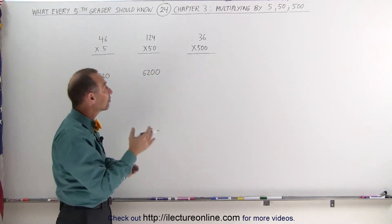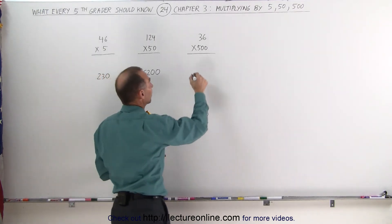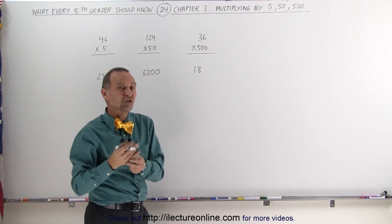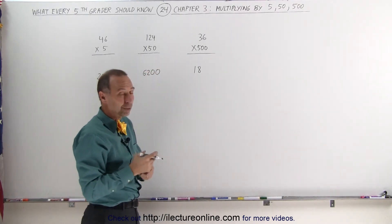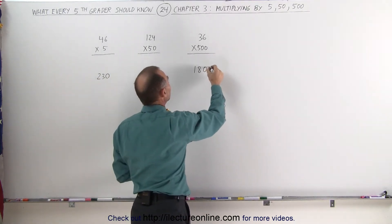Or 36 times 500. Take 36 and divide by 2. Half of 36 is 18. Now you multiply times 1,000, which is twice 500. Multiplying times 1,000 is the same as adding three zeros. The answer is 18,000.